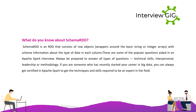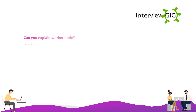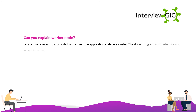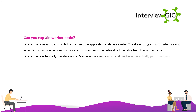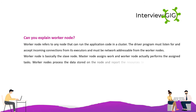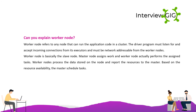Can you explain worker node? A worker node refers to any node that can run the application code in a cluster. The driver program must listen for and accept incoming connections from its executors and must be network-addressable from the worker nodes. The worker node is basically the slave node — the master node assigns work and the worker node performs the assigned tasks. Worker nodes process the data stored on the node and report resources to the master, which then schedules tasks.